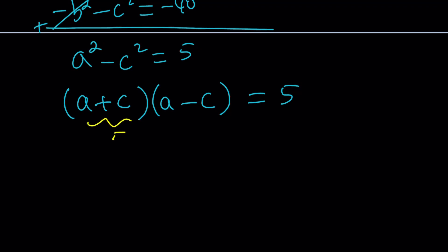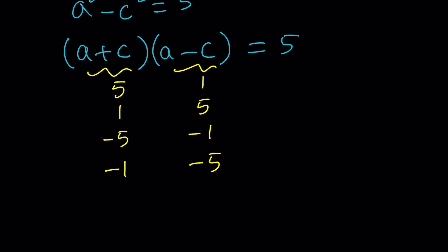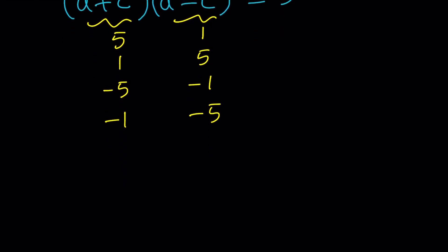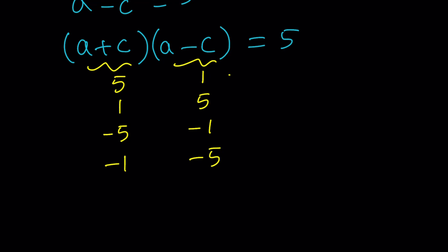So, this can be 5 and 1, or 1 and 5, or negative 5 and negative 1, or negative 1 and negative 5. Those are all the cases that you can factor these two factors. Now, where do we go from here? Each of these is going to give us a system. So, if you think about it, let's just pick one, and then we can apply it to the other ones. Because A plus C equals 5, and A minus C equals 1.